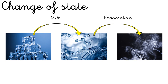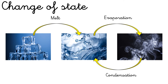We can pass from water to gas by evaporation. For example, when you heat water, you get water steam. We can also pass from gas to liquid by condensation. For example, when it's very cold outside and hot inside a house, you can see condensation of water on the windows.